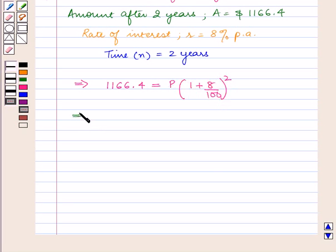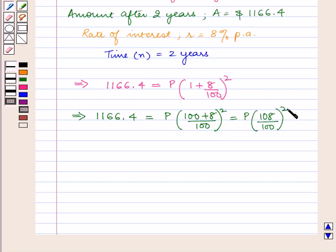This implies 1166.4 equals P times 108 upon 100 raised to power 2. This implies P equals 1166.4 divided by 108 upon 100 squared.